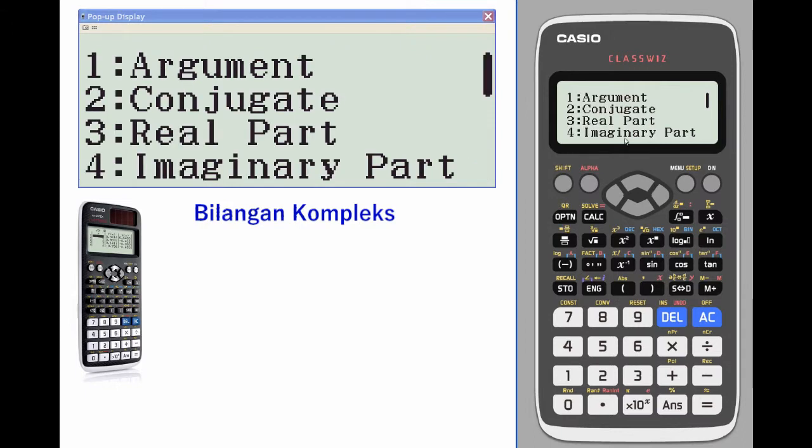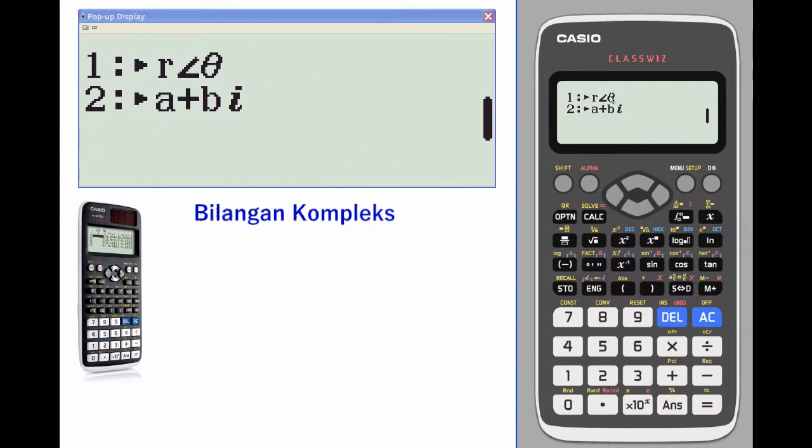We've also got some other options including finding the argument which is the angle on the imaginary plane, the conjugate, the real part, the imaginary part, putting your solution in r theta, or if you have it in r theta, converting to complex mode.